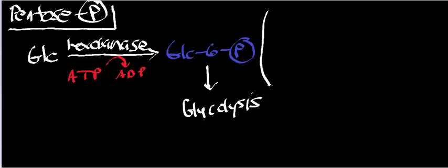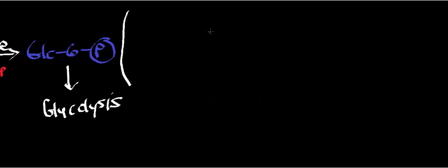Recall that glycolysis occurs in the cytosol, and so too does the pentose phosphate pathway. The pentose phosphate pathway is running right alongside glycolysis — it's kind of like a two-lane road, all going the same direction. It turns out that some of the products of the non-oxidative phase of the pentose phosphate shunt actually get moved back into glycolysis.